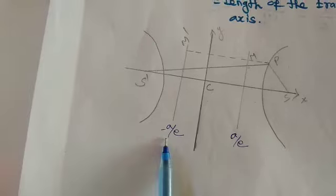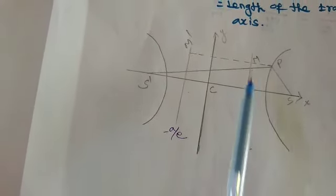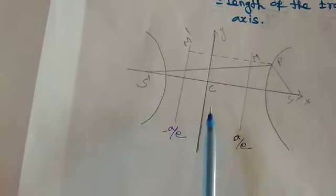So A by e minus of minus A by e, we get 2A by e. So MM dash length is equal to 2A by e.